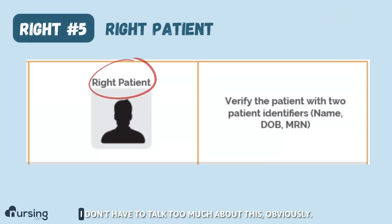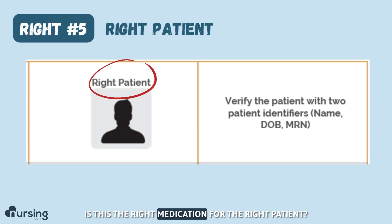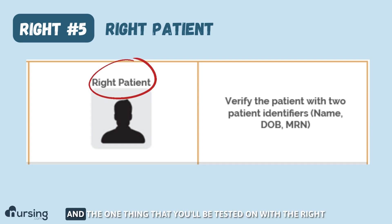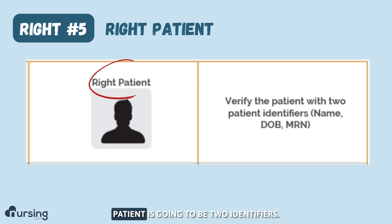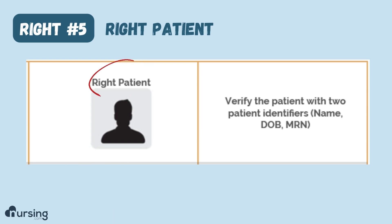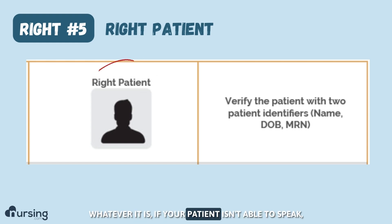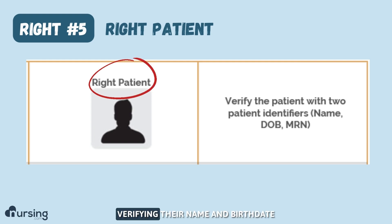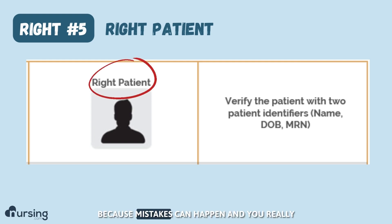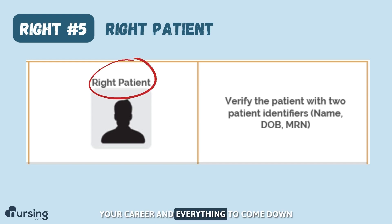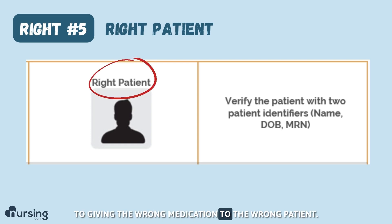The next one is right patient. Obviously, is this the right medication for the right patient? The key thing you'll be tested on is two patient identifiers — name and birth date, or hospital record number. If your patient isn't able to speak, you need to verify their name and birth date by comparing their wristband to the chart. Mistakes can happen, and you really don't want patient safety, your career, and everything to come down to giving the wrong medication to the wrong patient.